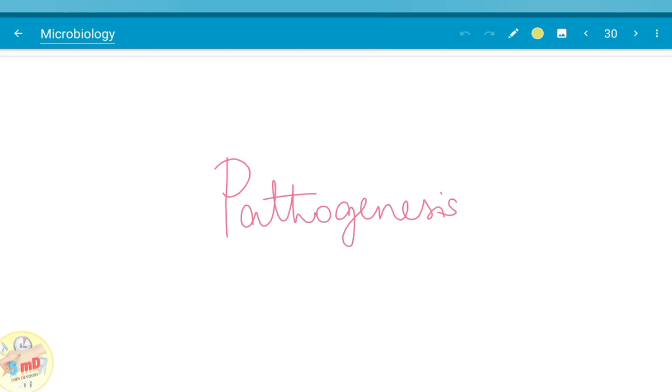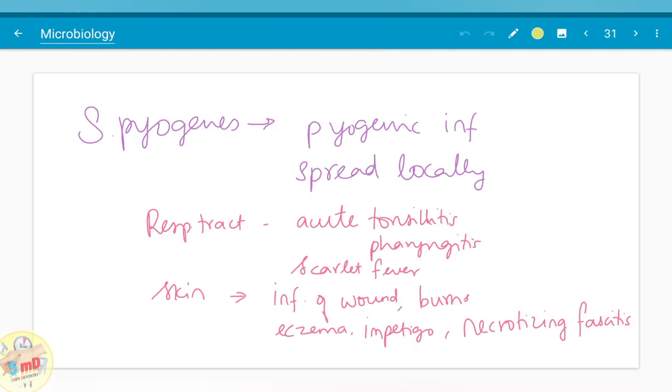Moving on to pathogenesis and laboratory diagnosis. Pathogenesis of Streptococcal infection, especially Streptococcus pyogenes infection, is as the name suggests, it is pyogenic, that is pus producing infection, and it spreads locally because of streptokinase, hyaluronidase kind of properties. Remember all the pyogenic infections of respiratory tract: acute tonsillitis, pharyngitis, scarlet fever which is rare in recent days. Skin infections include infection of wound, burns, eczema, impetigo, and necrotizing fasciitis is one of the common spreading infections.